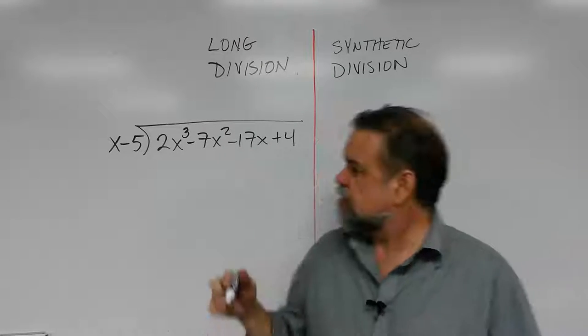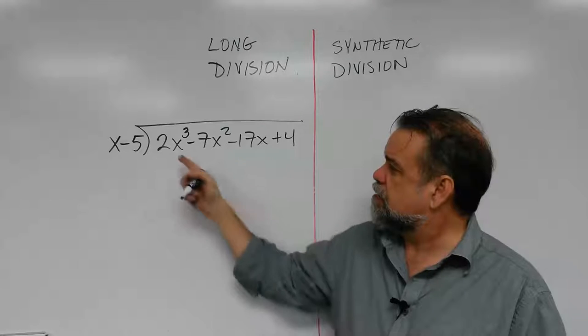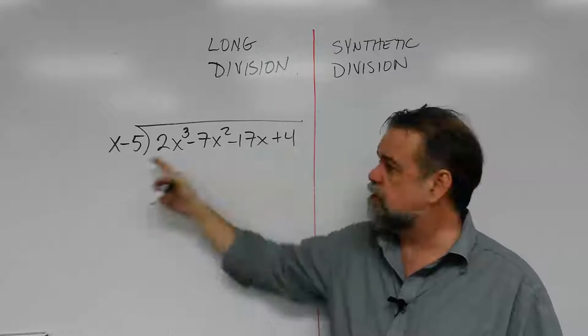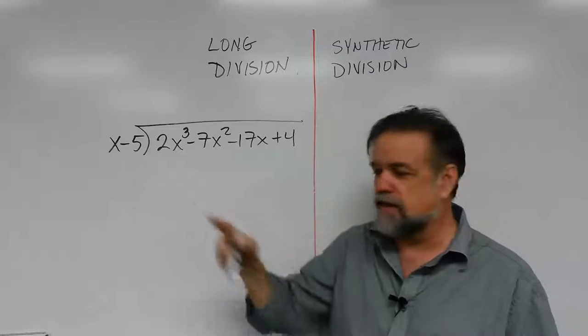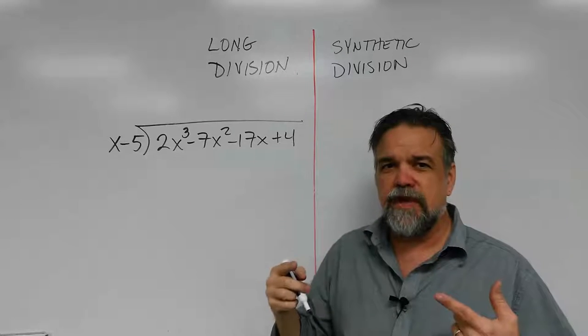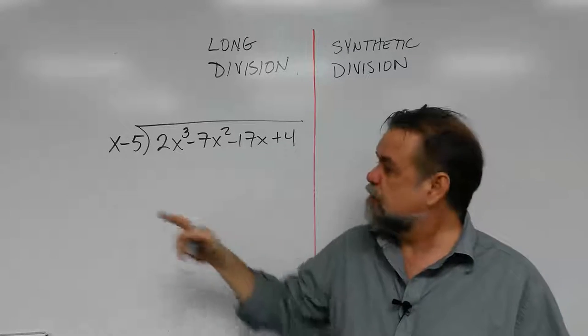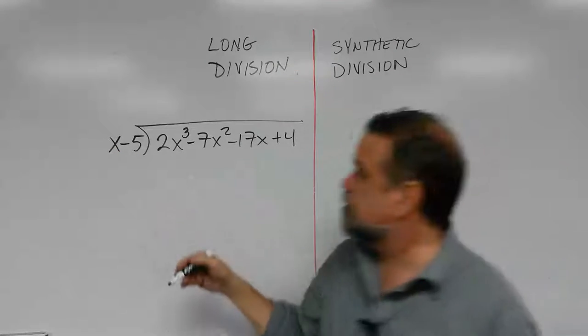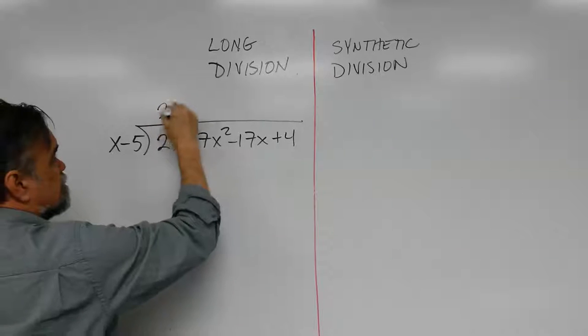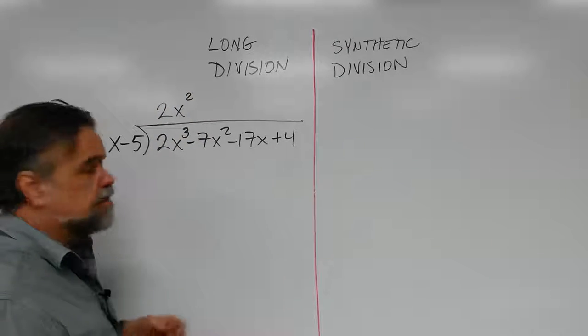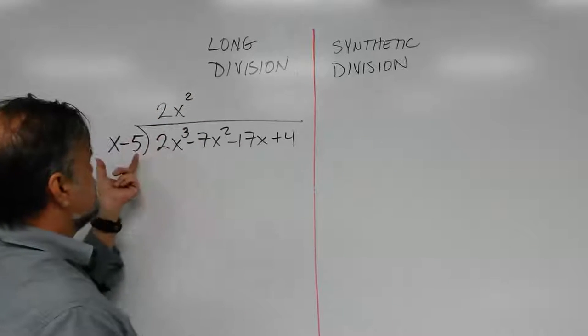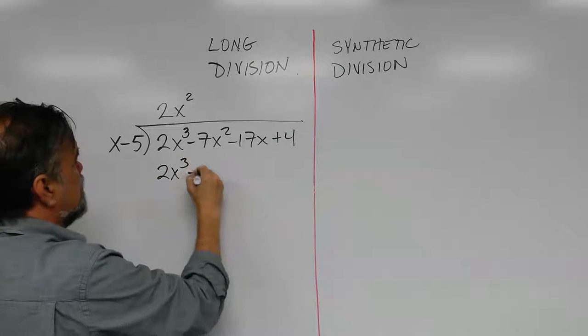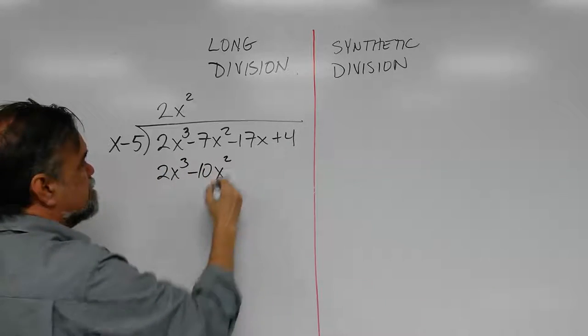Let's look at this example we have here. 2x cubed minus 7x squared minus 17x plus 4, and we're going to divide it by x plus 5. First off, let's remember how to do long division. First thing we do is we say x times what is 2x cubed? Well, that would be 2x squared, right?